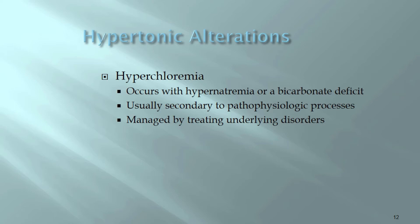Hyperchloremia is an anion imbalance that accompanies hypernatremia, since chloride follows sodium. It can also occur with bicarbonate deficits, resulting in excess chloride. Chloride deficiencies alone are quite rare, and the best approach is to treat the underlying disorder.